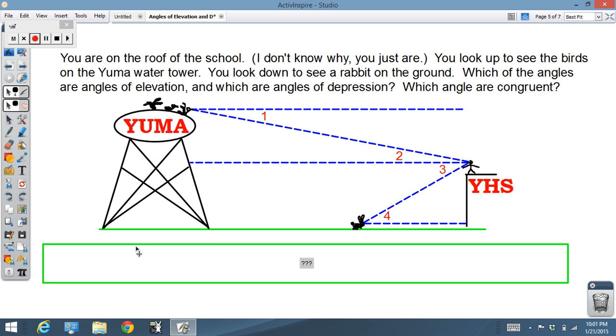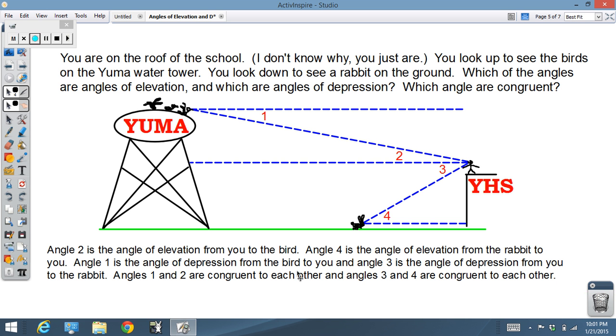Answer coming shortly. Angle 2 is the angle of elevation from you to the birds. Angle 2, angle of elevation. Angle 4 is an angle of elevation. Angle 4 is the angle of elevation from the rabbit up to you.